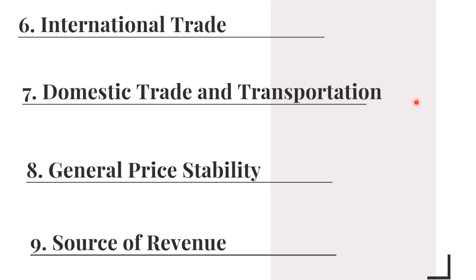The next point is domestic trade and transportation. In case of domestic trade, the agricultural sector plays an important role because in India, most people spend around 60 percent or more of their income on purchasing agricultural commodities. About 60 to 70 percent of expenditure comprises agricultural commodities like food grains, vegetables, fruits, beverages, and spices. We spend most of our income on purchasing agricultural commodities regularly from the market.